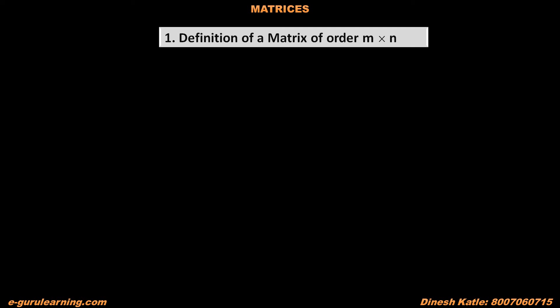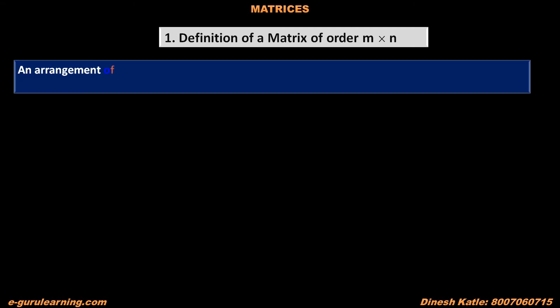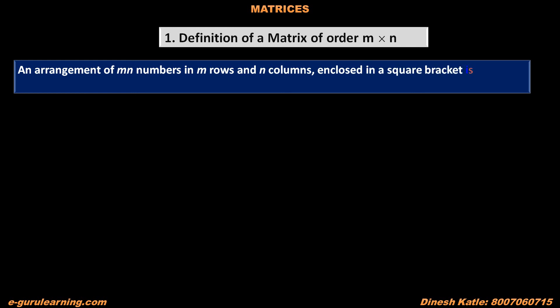In this chapter, first we have to learn the definition of a matrix of order M into N. An arrangement of MN numbers in M rows and N columns enclosed in a square bracket is called a matrix of order M into N, because it has M rows and N columns.